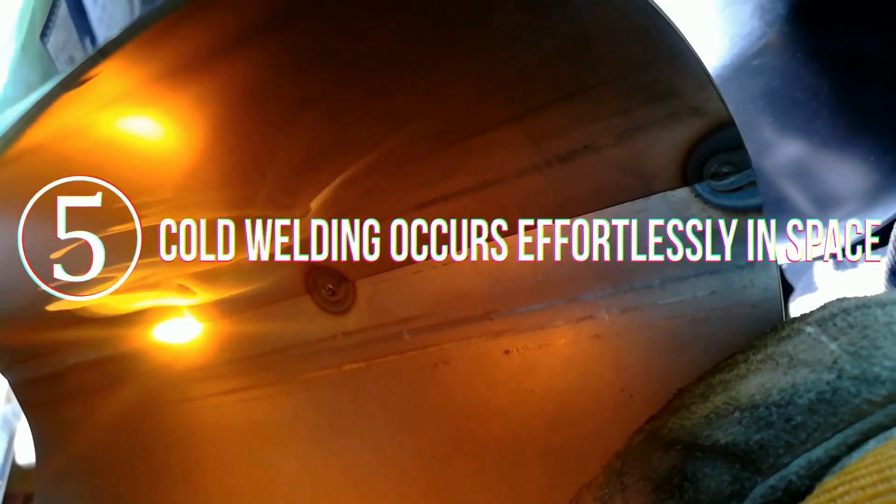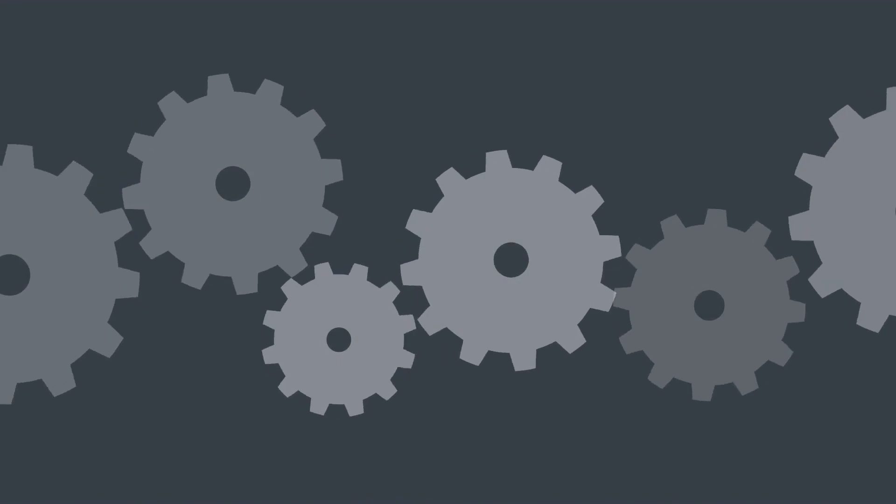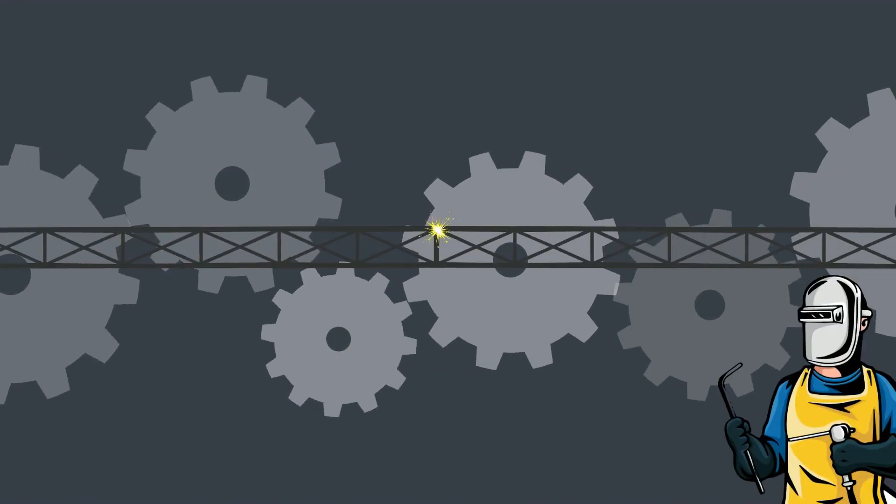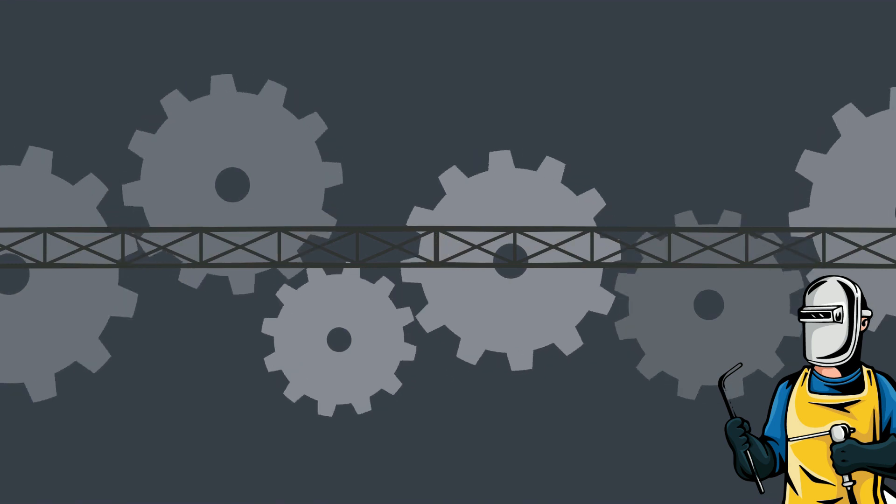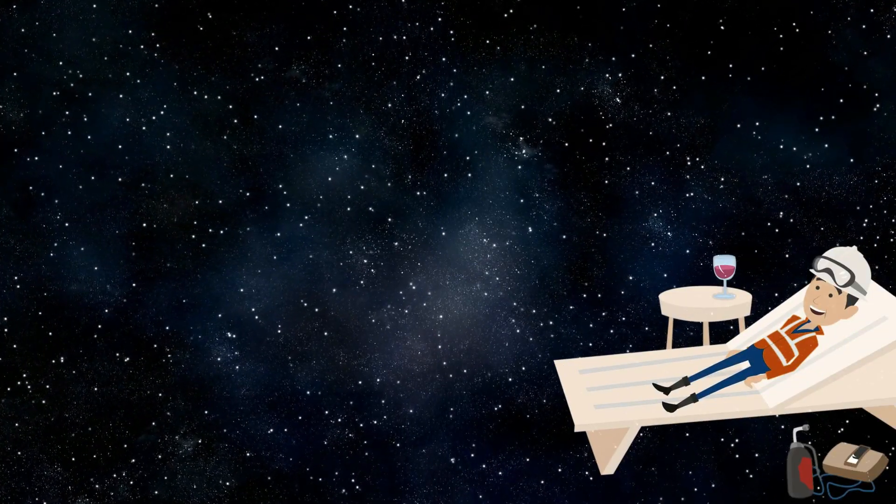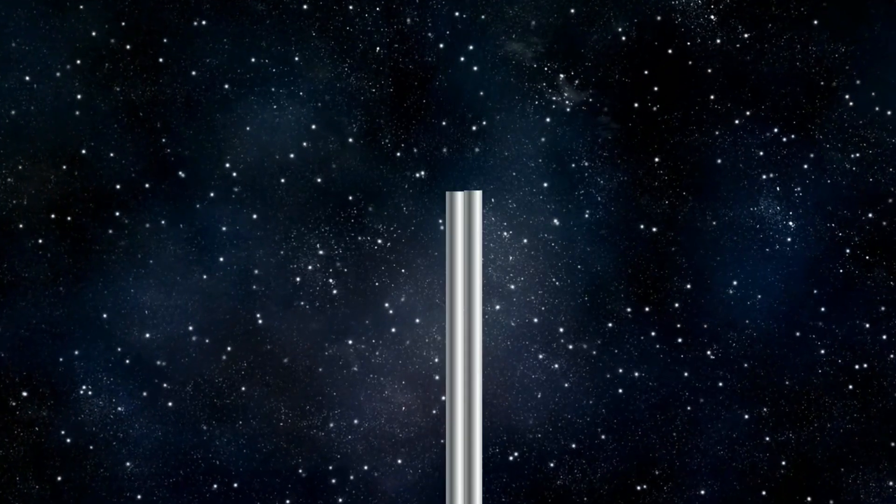Number 5. Cold welding occurs effortlessly in space. If you have heard of the term welding, you know it means to join two metals together. On Earth, we do this by melting and then sticking the metals together. In space, this process is done in the cold and without effort at all. In fact, if two metals of the same type touch each other in space, they stick together immediately.